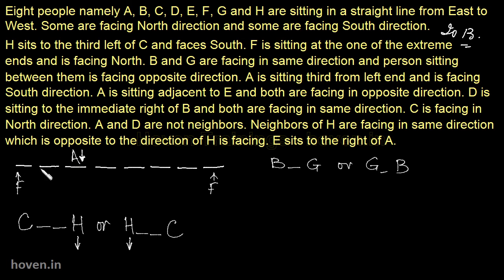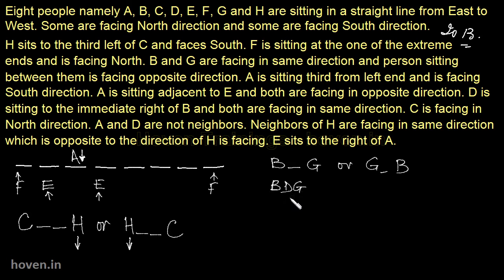A is sitting adjacent to E and both are facing in opposite directions. So E's exact position is not known — he is either to the left or right of A and is facing upwards. D is sitting to the immediate right of B and both are facing in the same direction. This means D is either like B-D or within G-space-B-D arrangements — so it is one of four possibilities.